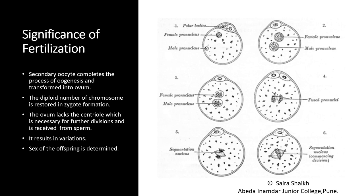Because of fertilization, variation is also produced, and in this process the sex is also determined. In the case of males, two types of sperms are produced: X type and Y type. The sex of the individual depends on which type of sperm fertilizes the female gamete. If the X type of sperm fertilizes, the offspring will be XX — that is female. And if the Y type of sperm fertilizes the egg, then the combination will be XY and that will be a male child.